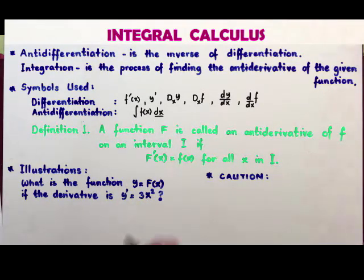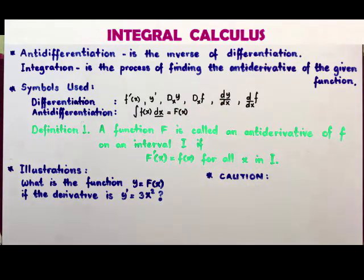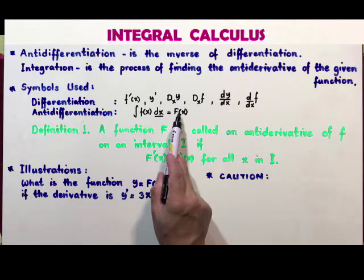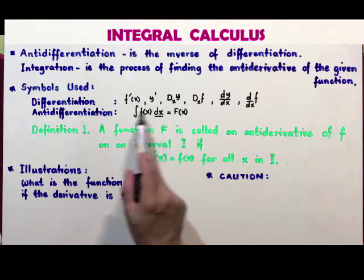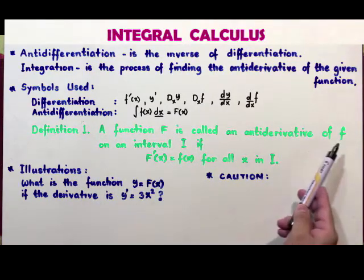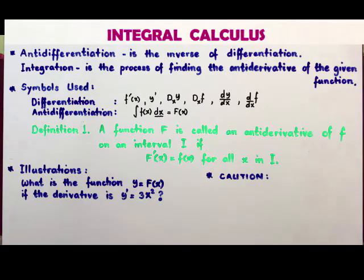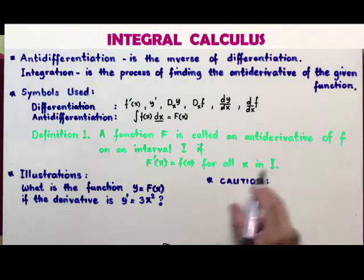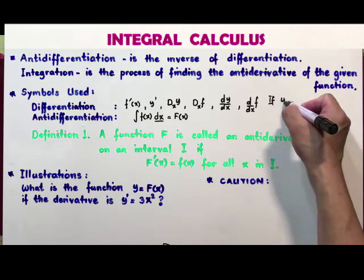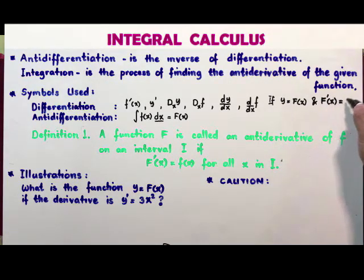The dx gives you an idea of the variable of integration. If the integral of f(x) dx is big F(x), then the derivative of big F(x) is small f(x). A function big F is called the anti-derivative of small f on an interval I if big F prime of x equals small f(x) for all x in I.